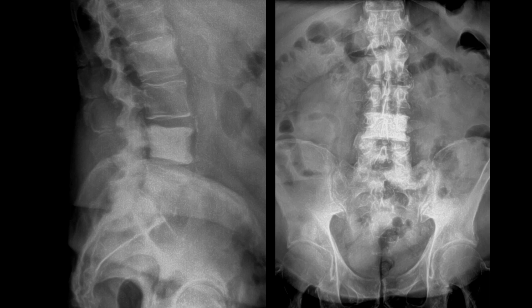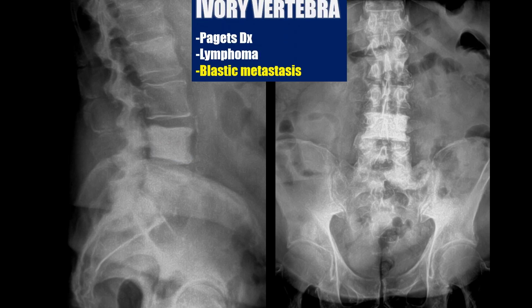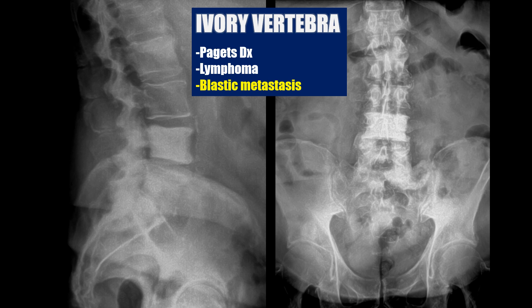This is a good example of increased bone density. If you compare the L4 vertebral body in relation to the other segments, you can see there's clearly an increase in bone density. This can be referred to as an ivory vertebra, which is often seen with things like Paget's disease, lymphoma, or blastic mets.